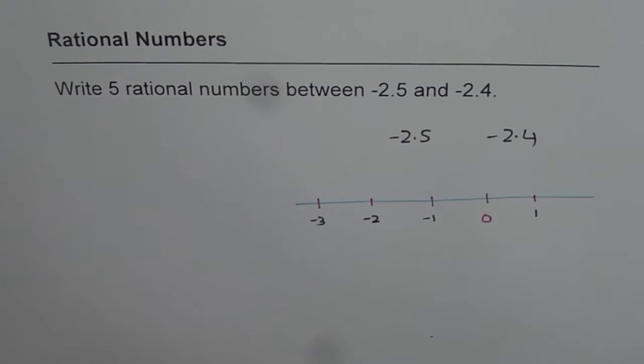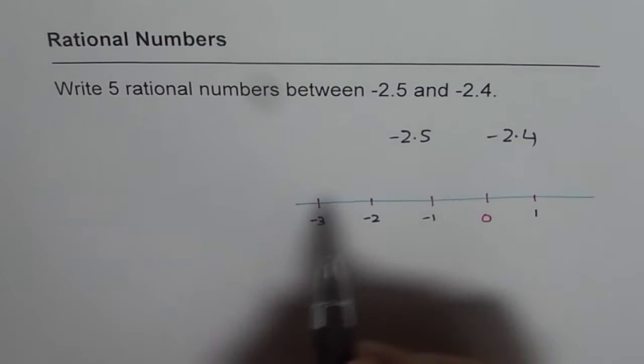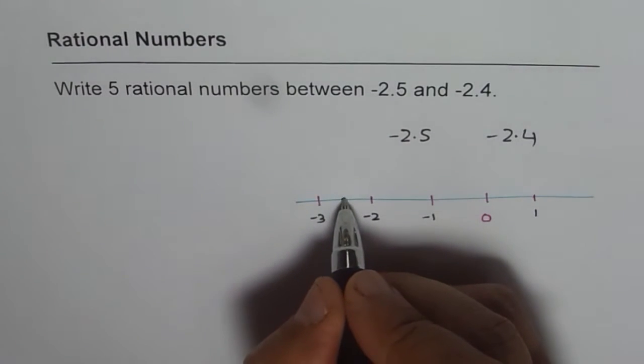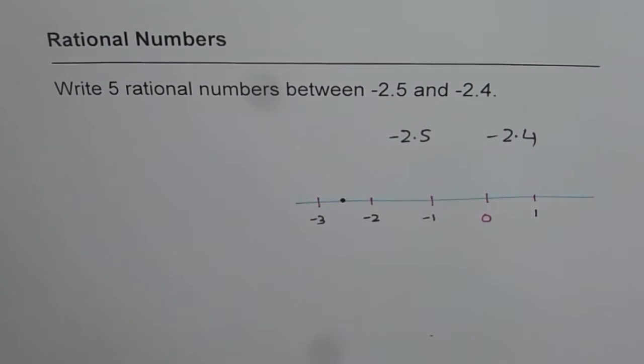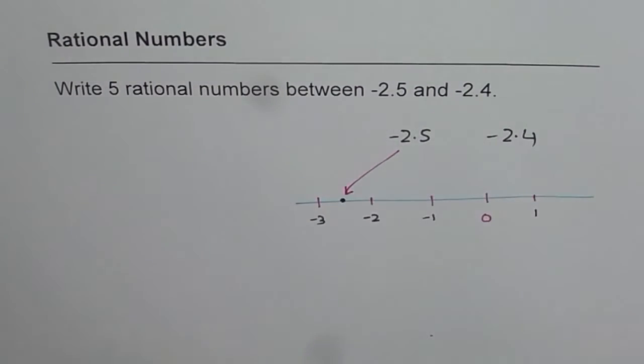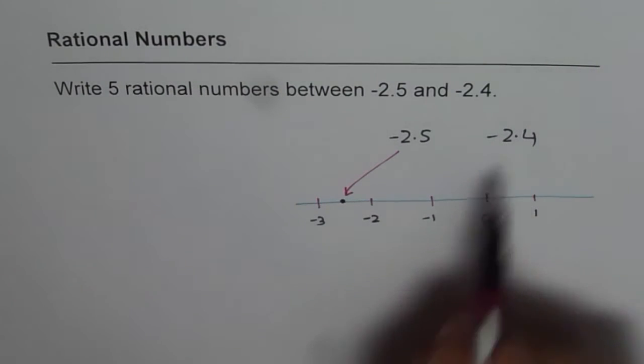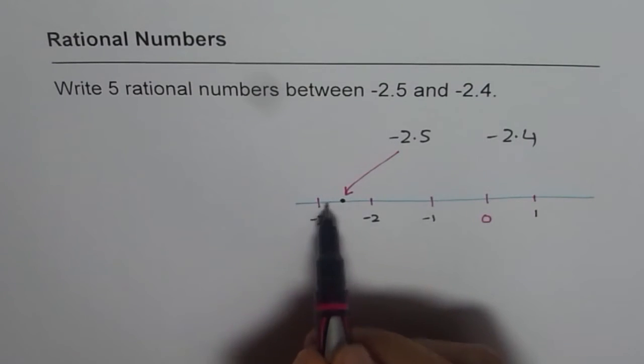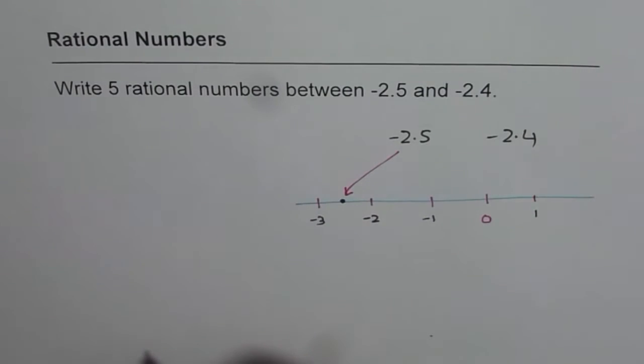Now, let us say minus 2.5 will be exactly in the center of minus 3 and minus 2. So, this number for us is minus 2.5. Now, minus 2.4 will be where? Will it be to the right or to the left of minus 2.5?